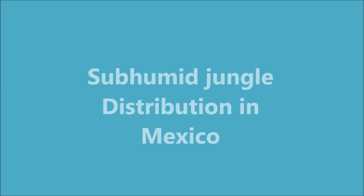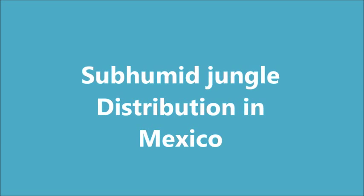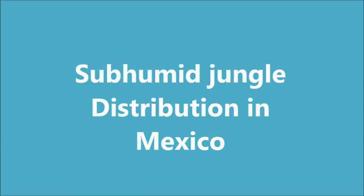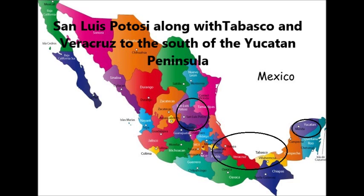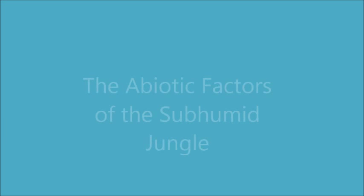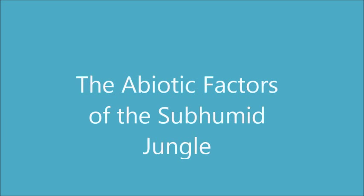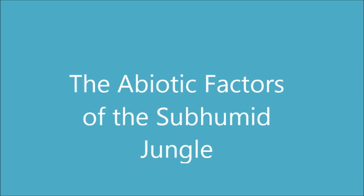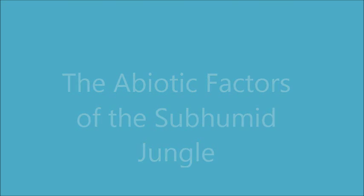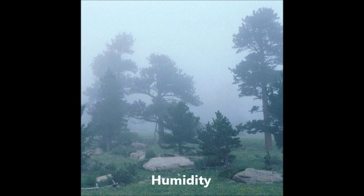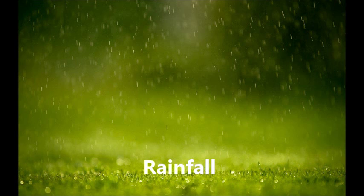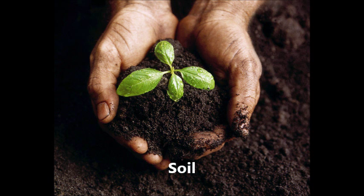The Subhumid Jungle Distribution in Mexico. It is located in San Luis Potosí, along with Tabasco and Veracruz, to the south of the Yucatan Peninsula. The Abiotic Factors of the Subhumid Jungle: humidity, rainfall, and soil.